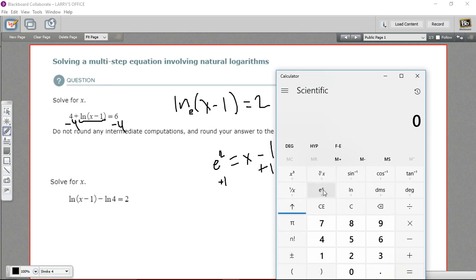So now I've got e to the x, I can get e squared by punching in a 2 and then hitting the e to the x. So e squared is 7.3, et cetera. And then we're just going to add 1 to that, so plus 1.